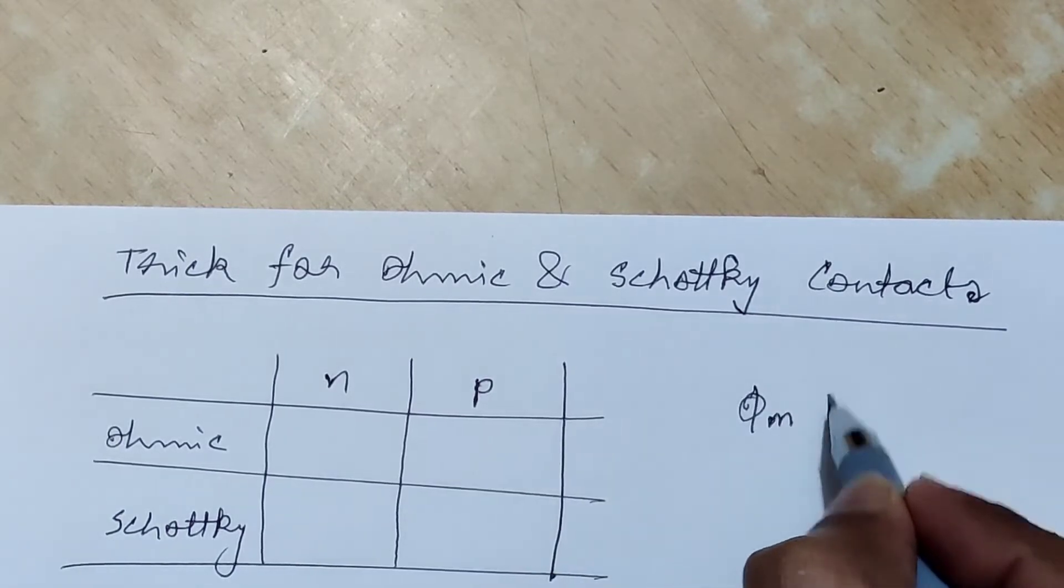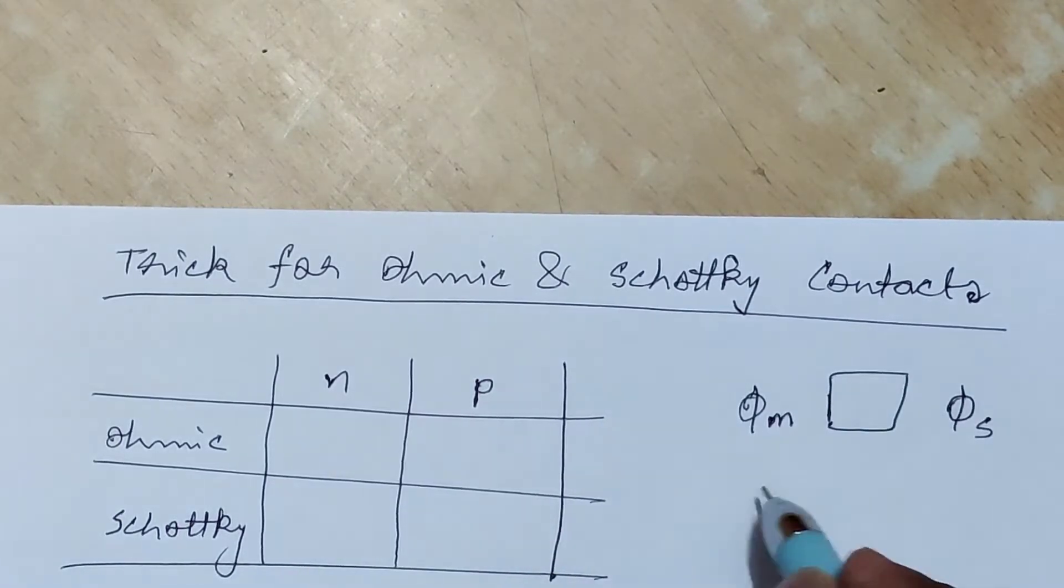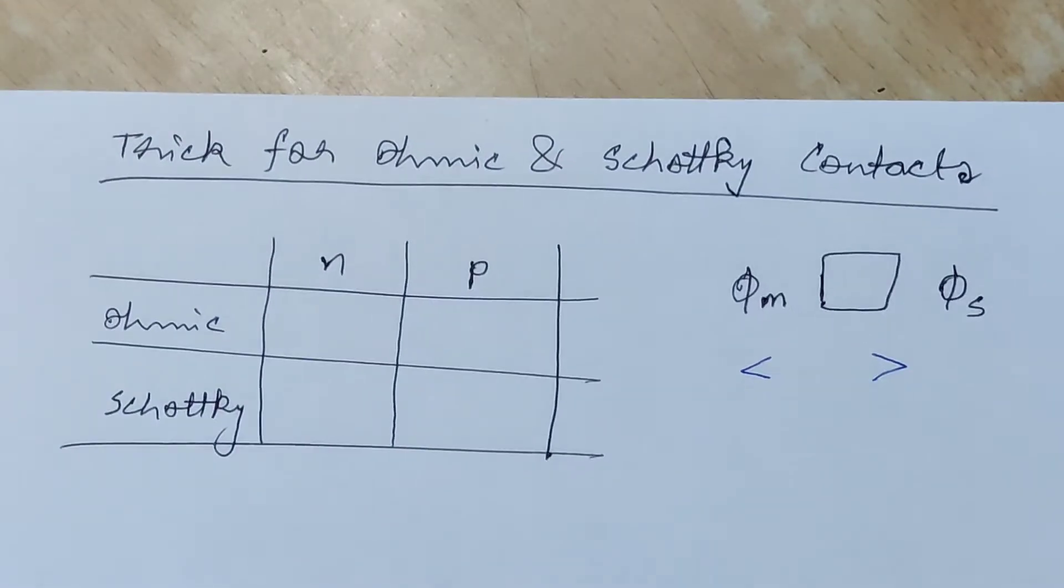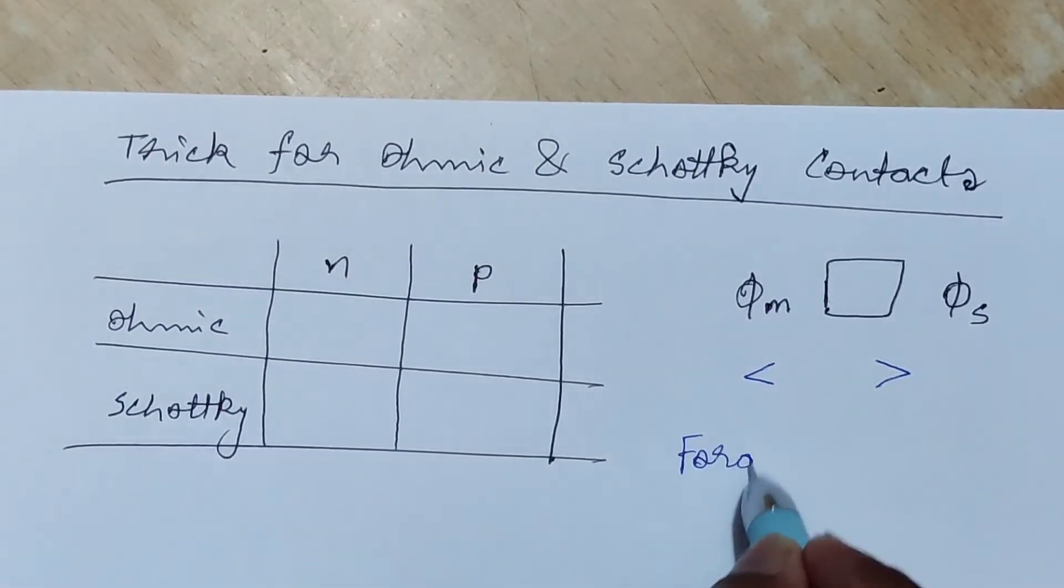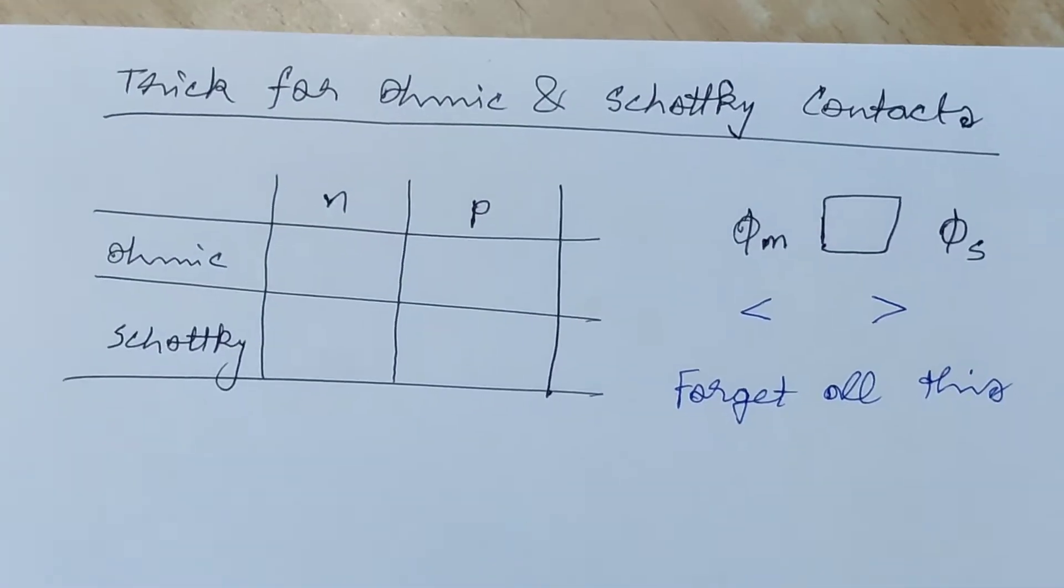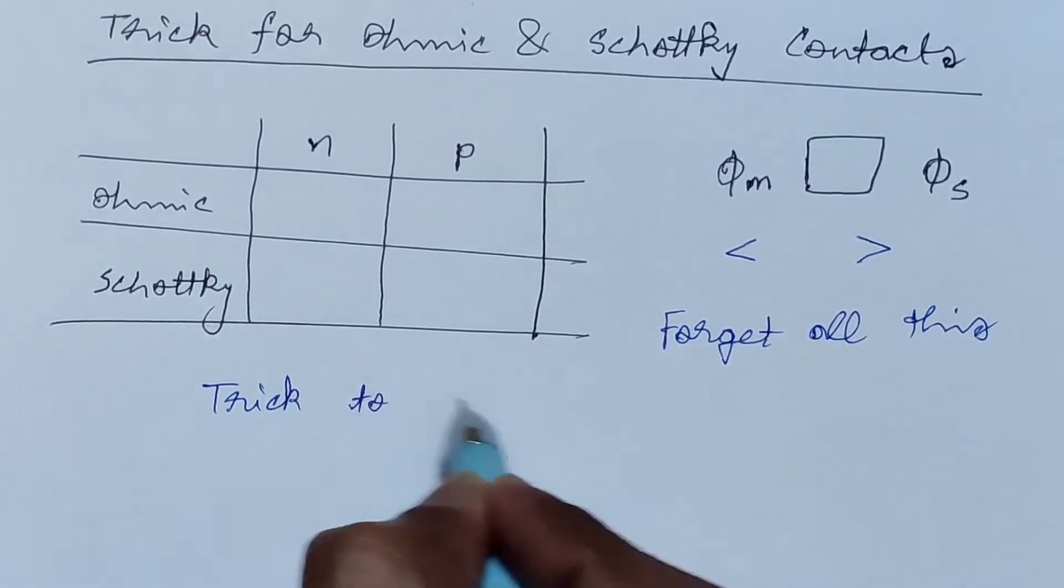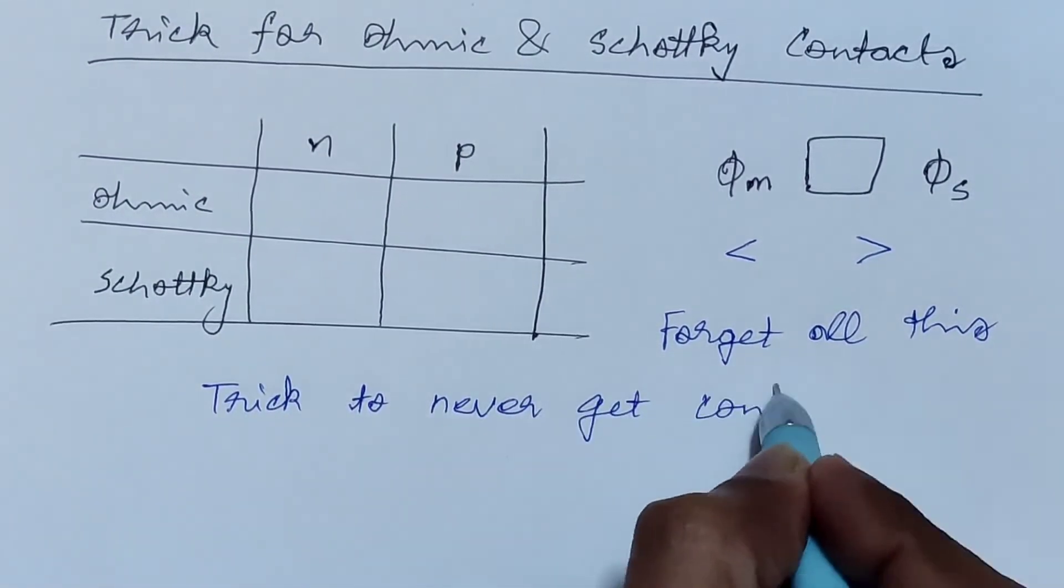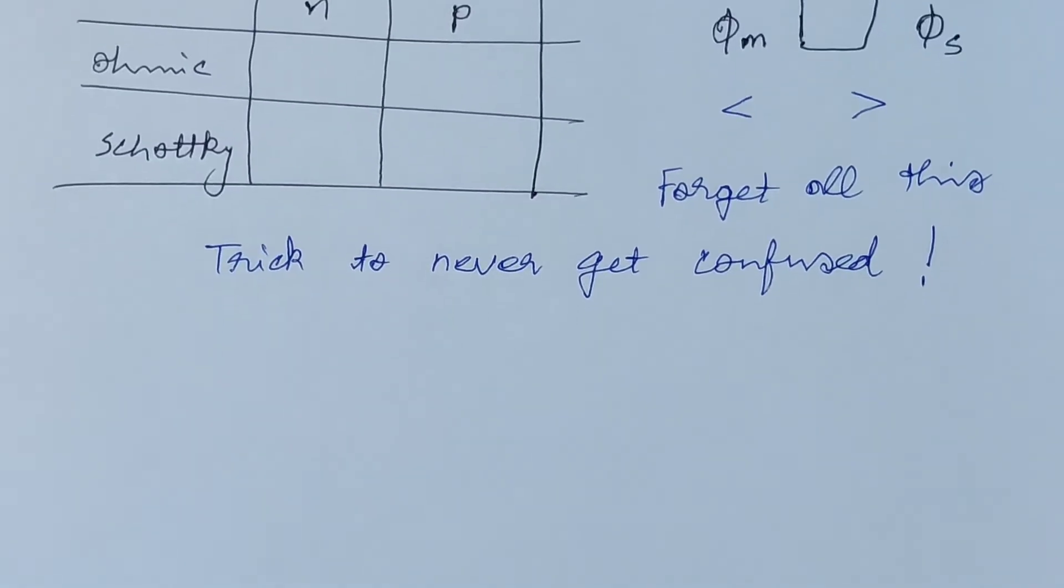Sometimes they might have gone through expressions between φm and φs, whether it is lesser or greater, relating to the n and p type semiconductor. They can identify whether it is an ohmic contact or Schottky contact.